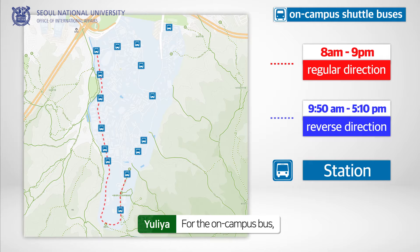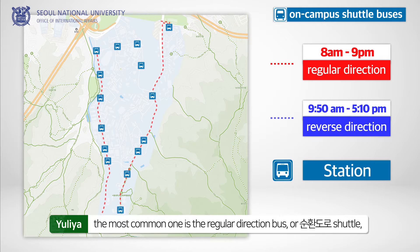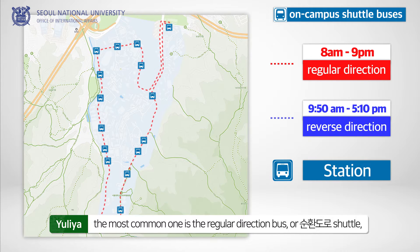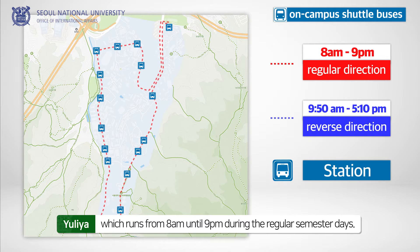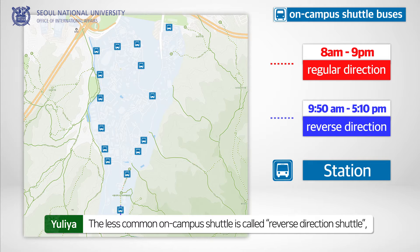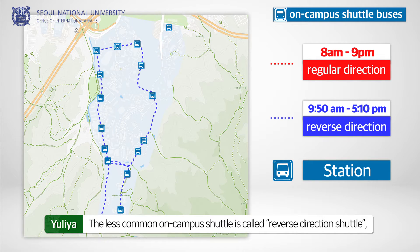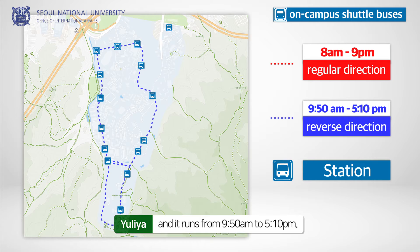For the on-campus bus, the most common one is the regular direction bus or Sunan-doro shuttle, which runs from 8am until 9pm during regular semester days. The less common on-campus shuttle is called the reverse direction shuttle and it runs from 9:50am to 5:10pm.